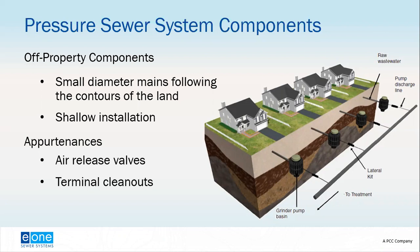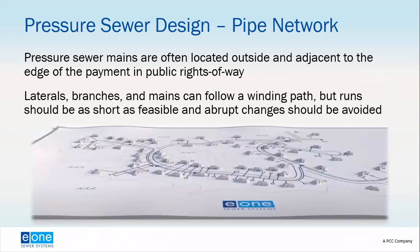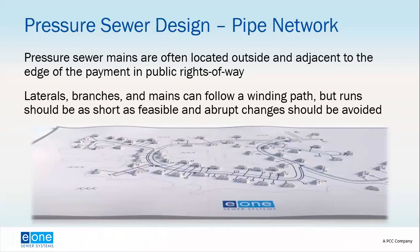Unlike gravity sewer systems, pressure sewer systems are often located outside and adjacent to the edge of the pavement. The smaller diameter pipe can be installed using horizontal directional drilling methods or low-impact cover — you need a much smaller excavator. Laterals and branches in the mains can follow a winding path, deviating both horizontally and vertically. Keep runs as short as possible and avoid abrupt changes — the pipe can go around a curve but should not make abrupt 90-degree turns; instead, use nice sweeping curves.